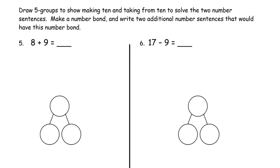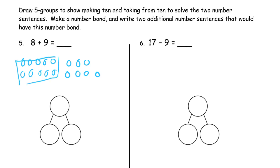Now we're drawing five groups to show making ten and taking from ten to solve two number sentences. These are mental math tricks you can use to solve subtraction problems without counting. Here we have eight plus nine. We draw eight in five group rows, then nine more — that gives us a ten and seven more, so seventeen. We have 17 with parts of eight and nine.